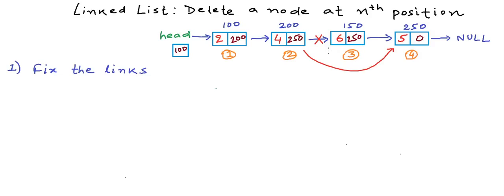This is one scenario for deletion in which we have a node before and a node after. There will be special cases, like when we want to delete the node at the first position or the head itself. In that case we will have to point head to the second node. We will talk about all these special cases in our implementation. Let's first understand the logic.